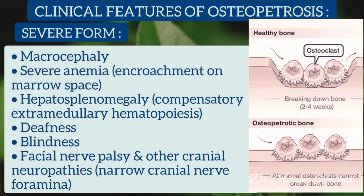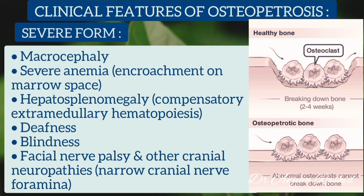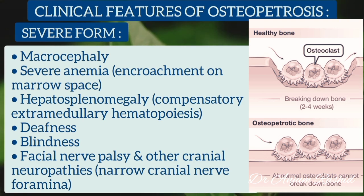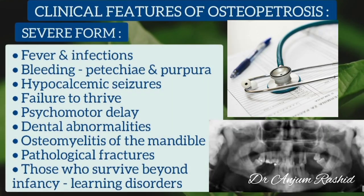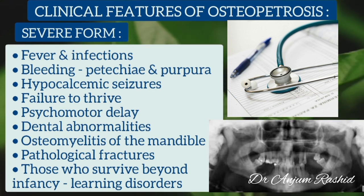The severe form of osteopetrosis presents in early infancy with macrocephaly and severe anemia due to encroachment on the marrow space, hepatosplenomegaly due to compensatory extramedullary hematopoiesis. There is also deafness, blindness, facial nerve palsy, and other cranial neuropathies due to narrowing of the cranial nerve foramina. Fever and infections due to leukopenia are also present.